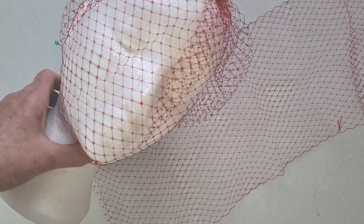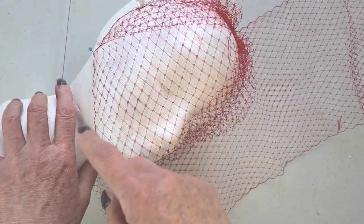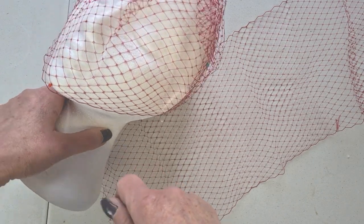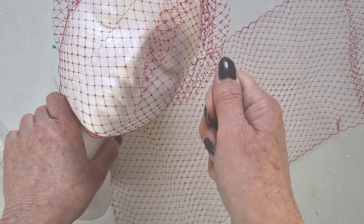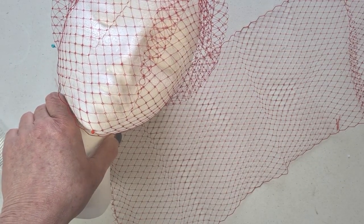Now when I've finished the veil I pin it on the polystyrene block and then I steam it and then I leave it to dry.